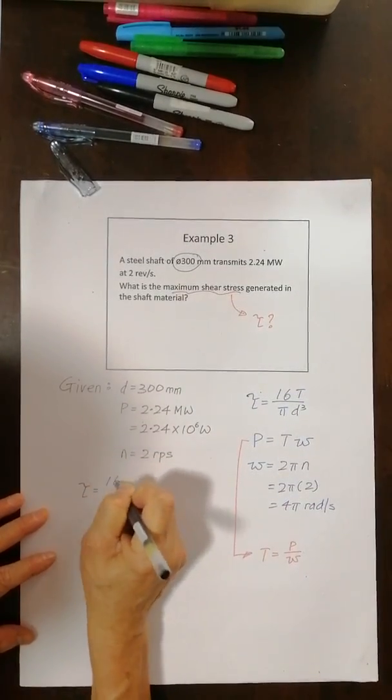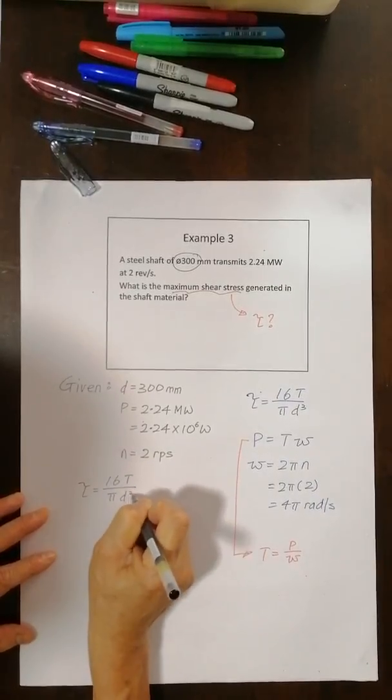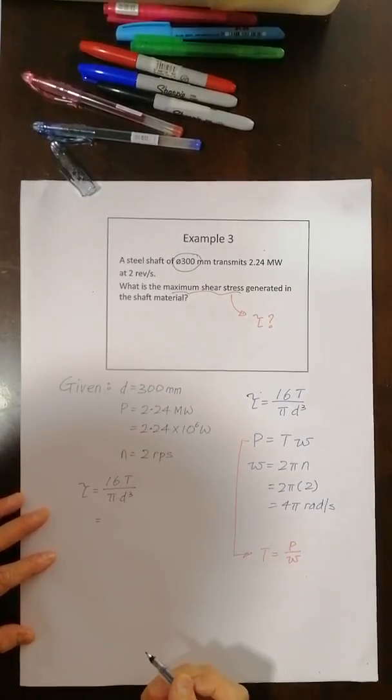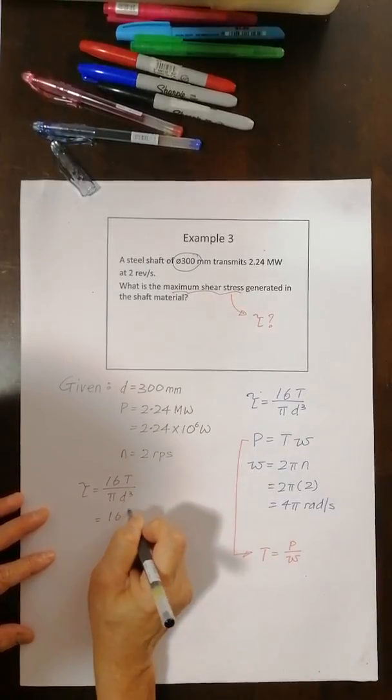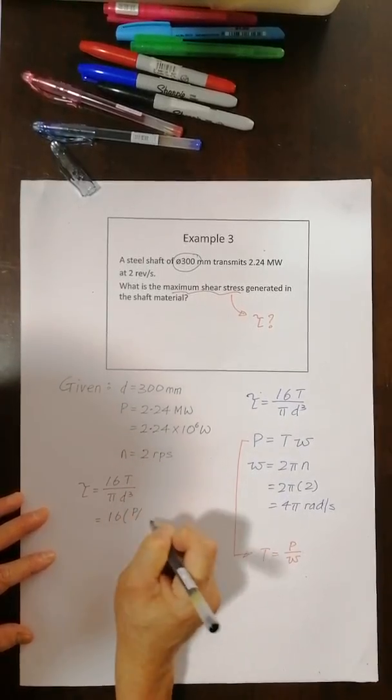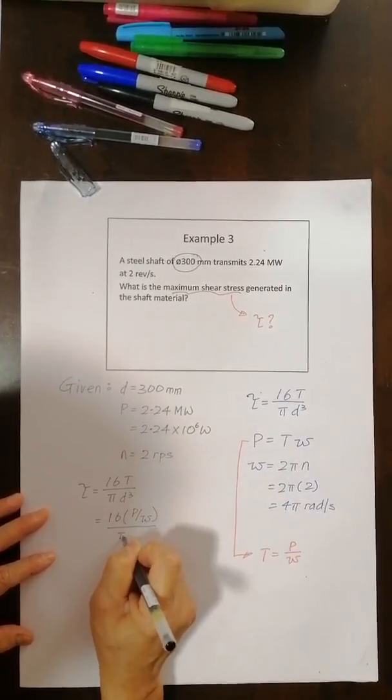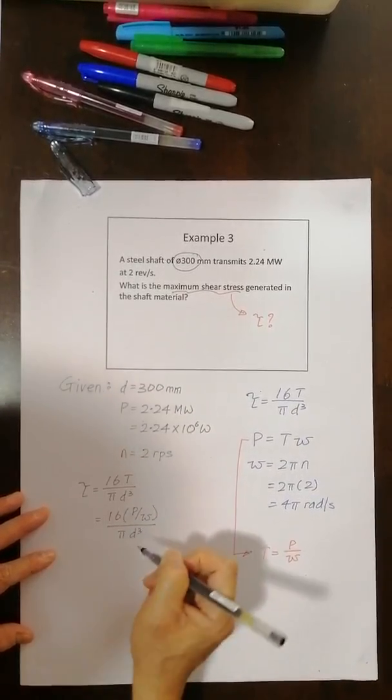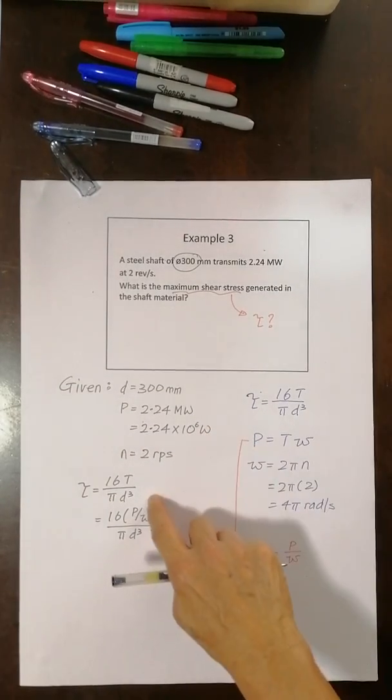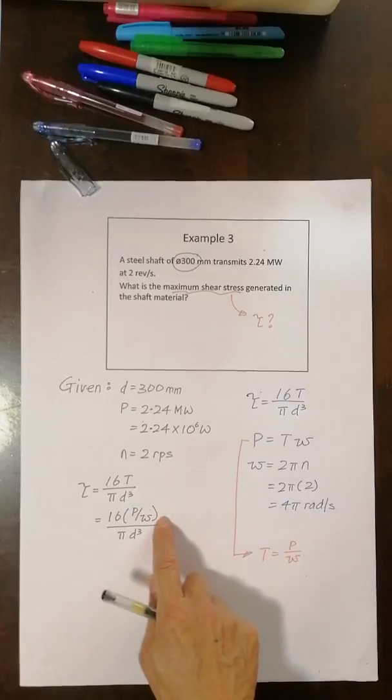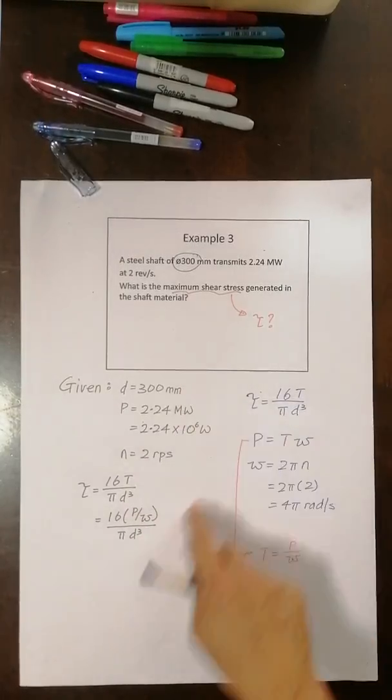Shear stress is 16 T over pi d cubed. Let's put in the terms I know. T into here. I got 16 power over omega over pi d cubed. And that's very neat because you see power. I got a value here. Power can come in here. Omega will come in from here. And diameter is what I want to do. Well diameter, I got it from here.